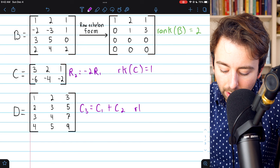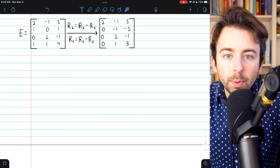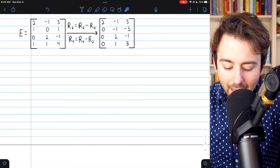If all else fails, we can always put the matrix into row echelon form and count the non-zero rows. Let's do one more example of that with this matrix E.